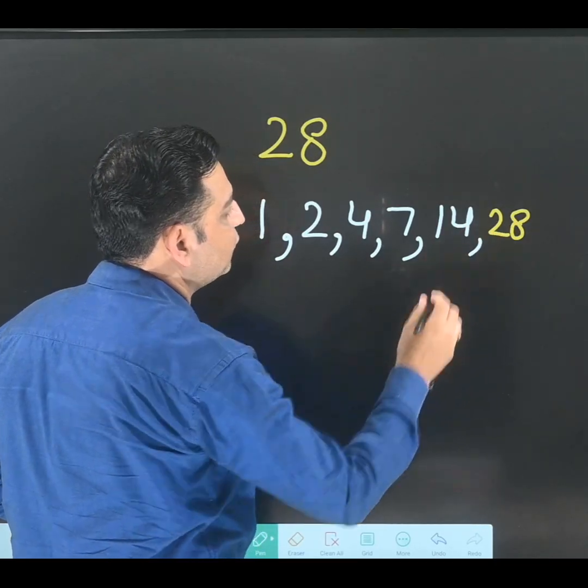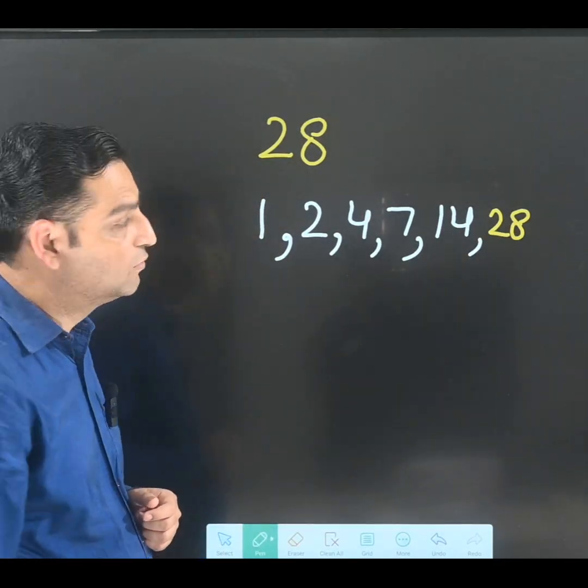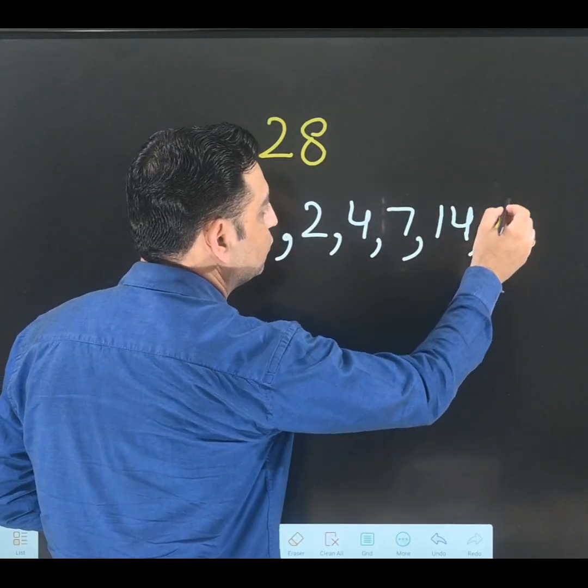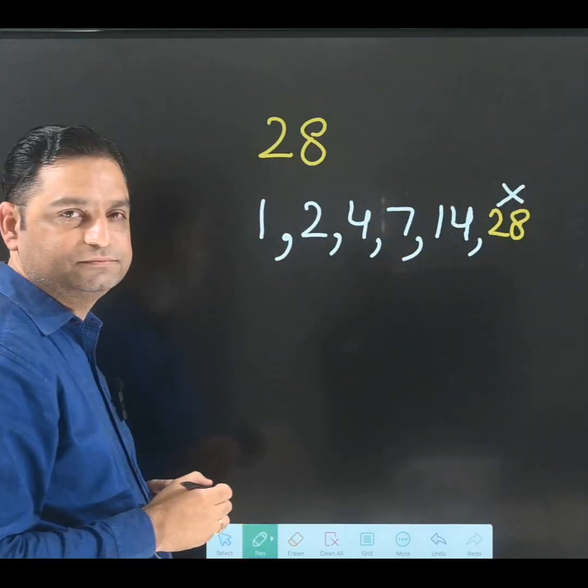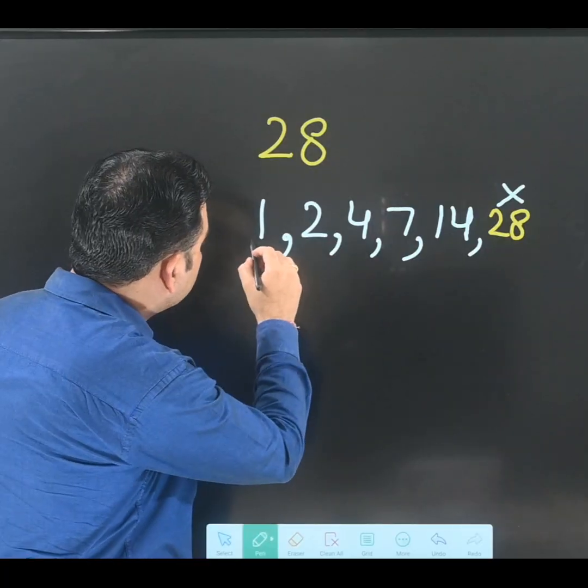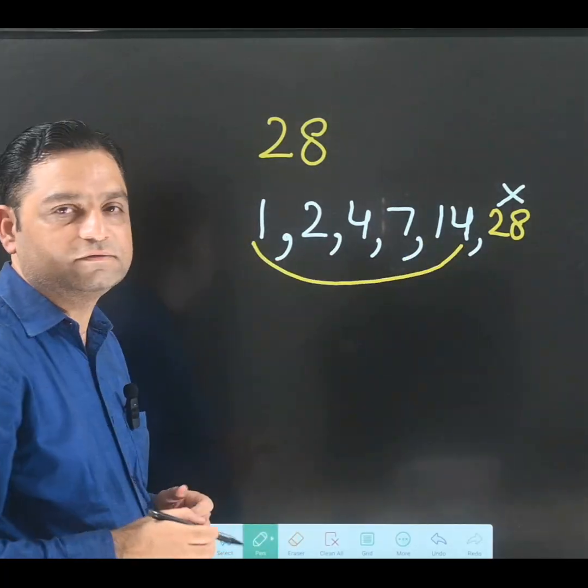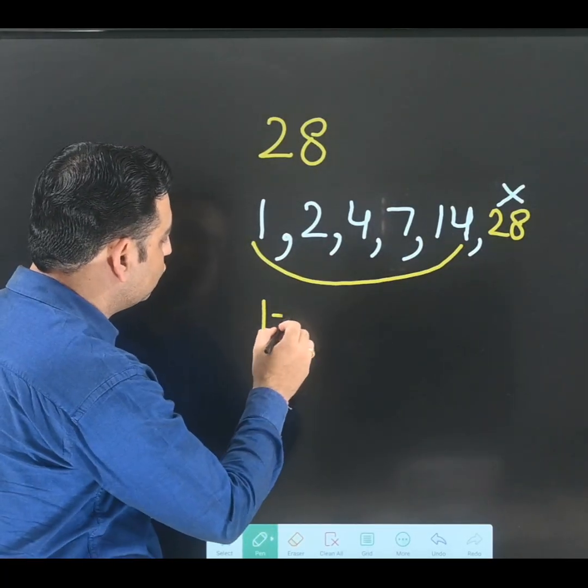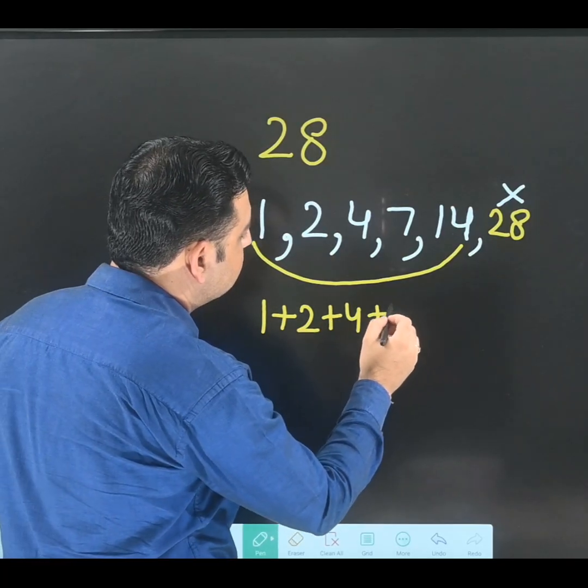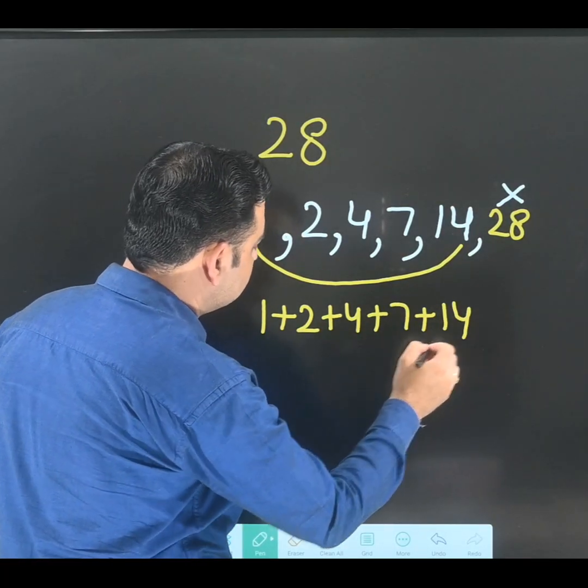28 is also a factor of 28, but we are not going to take this 28 into the picture. Let us try adding all these factors: 1, 2, 4, 7, and 14. Let us see what we get.